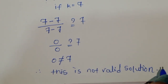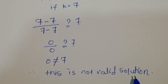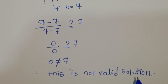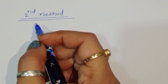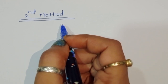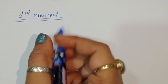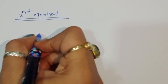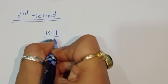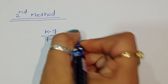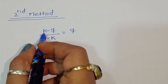From Method 1 we saw there is no real solution for this equation. Now let's use a second method to solve it and see if there is any solution. The question is: k minus 7 divided by 7 minus k equals 7.